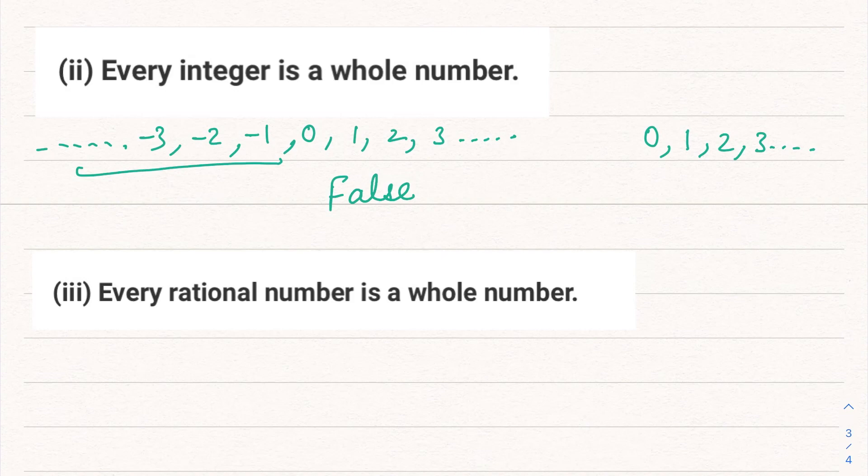Third part: Every rational number is a whole number. Let's talk about rational numbers. Rational numbers are those numbers that are written in p by q form.